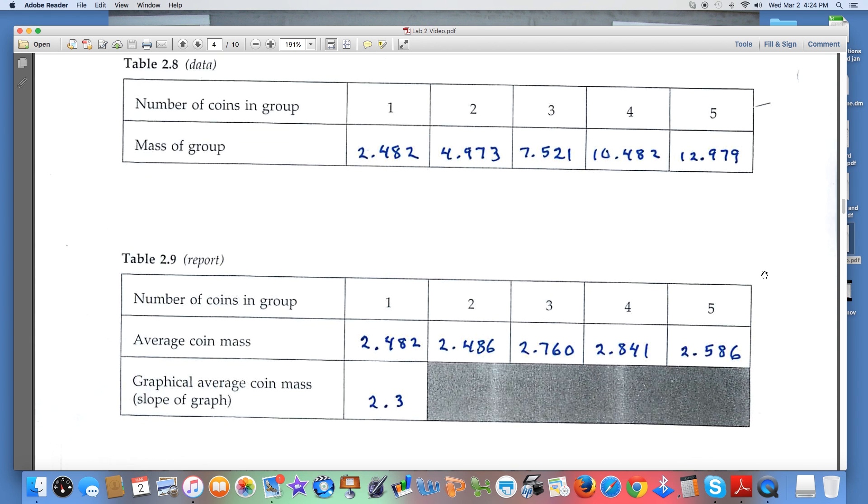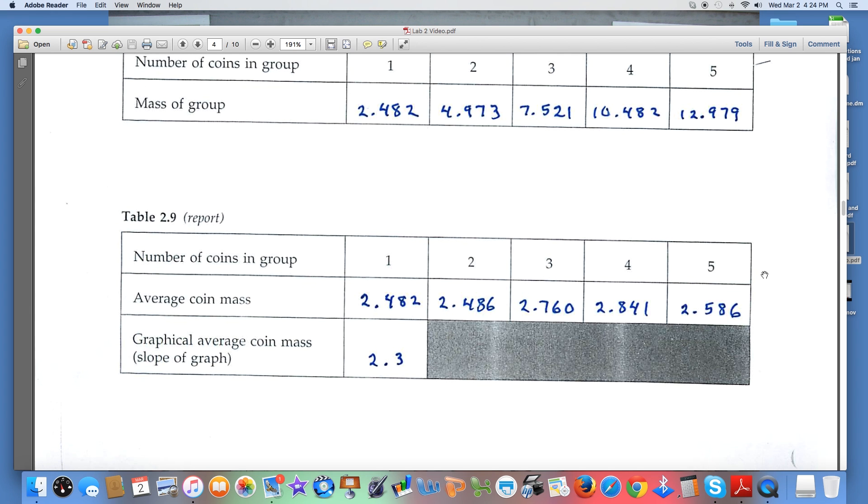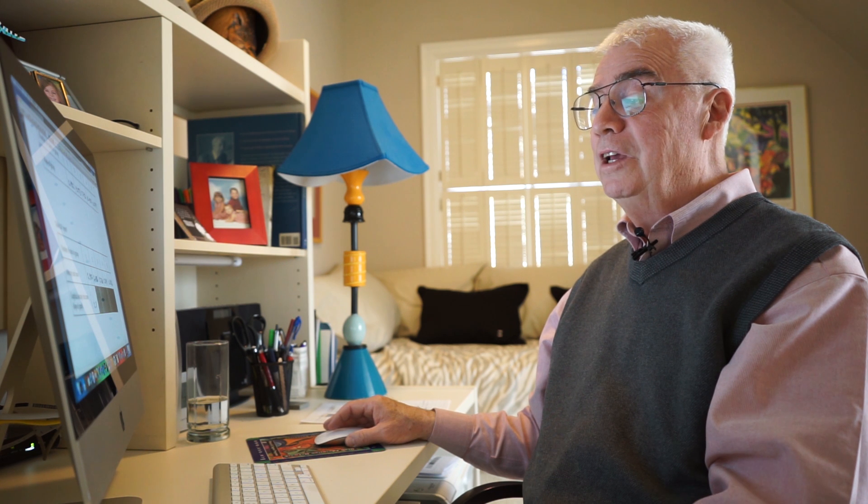In table 2.9, when you calculate the average coin mass, again dividing the total mass by the number of coins to get the average. This last blank really deals with the next page in the experiment book, the graphical average of coin mass. We'll talk about graphs in just a second. Notice that I've just got two significant figures here. You'll draw a graph, you'll read the graph to get this number, and the graph can only be read to the tenth, so make sure that you've got two significant figures here. If you use three or four significant figures, we know that you really didn't use the graph but were just calculating a mathematical average.